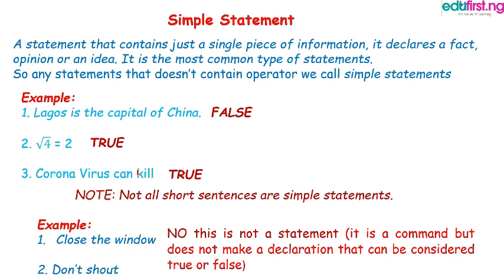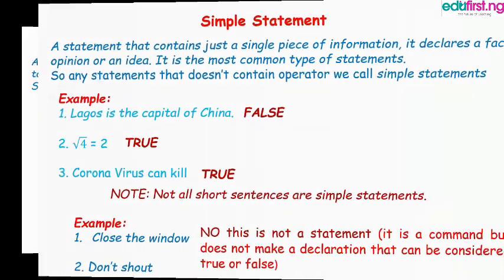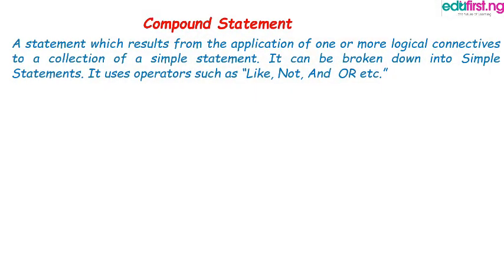Every statement that you can say is either true or false is a logical statement. If it is a logical statement and it does not have operators, then you say it is a simple logical statement. But what if it has operators? We call them compound statements. Why? Because they have operators like not, and, or. These operators link one or two simple statements together.